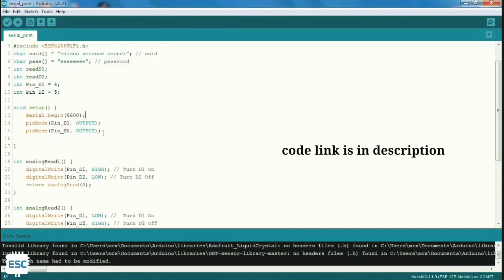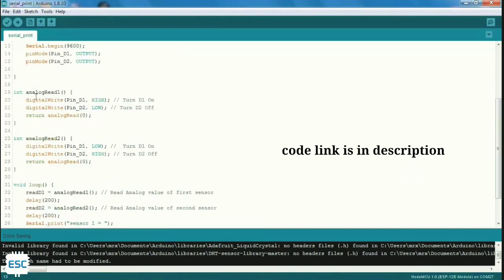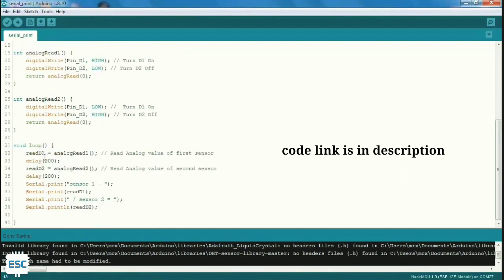In the setup section, I defined two digital pins as output. To read first sensor value, I turned on D1 and turned off D2 and vice versa. In the loop section, I used to read value one after the other. That's all.